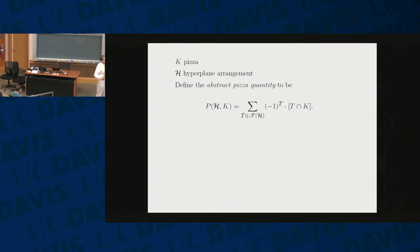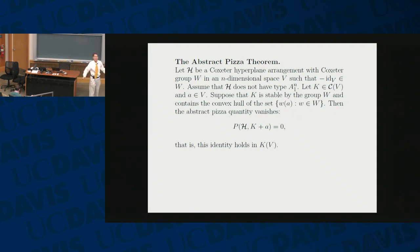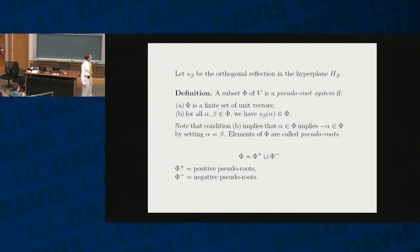The abstract pizza quantity takes place in this abelian group. The abstract pizza theorem is that under the same conditions as before, this actually holds in this huge abelian group — so there is a dissection proof here. To prove it, we have to go back to root systems. Note that I'm not doing classical crystallographic root systems — I'm doing pseudo root systems.